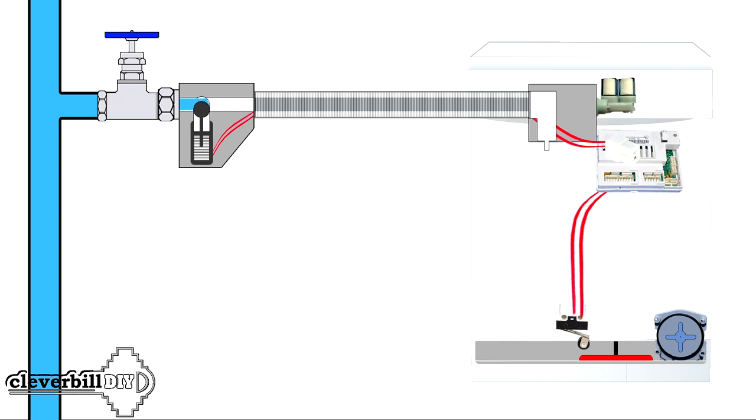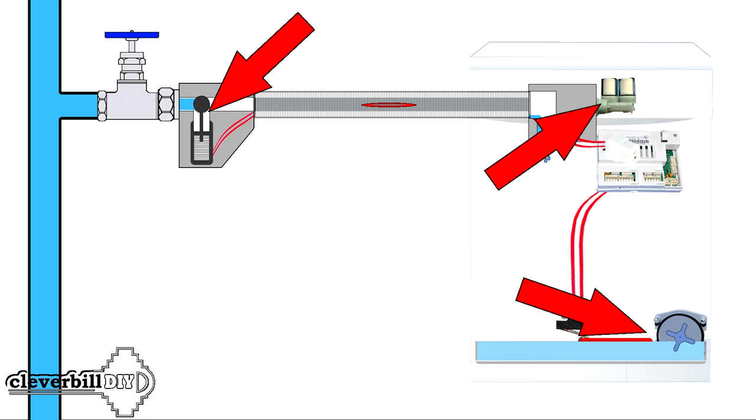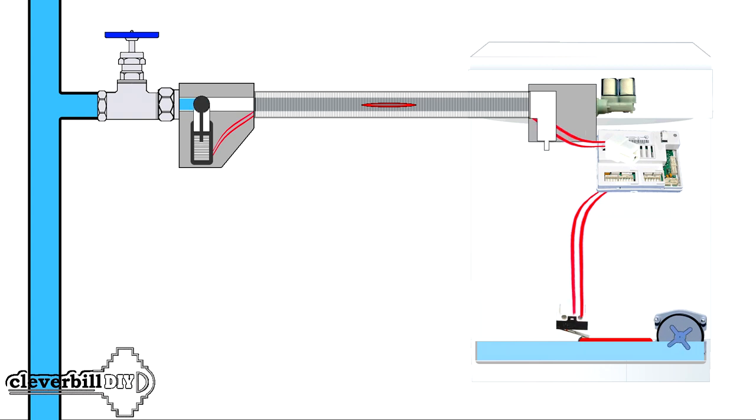The principle of operation of such a protection system differs from the previous one. During the operation of the washing machine, if the inner hose is damaged, water that gets between the two shells begins to flow through the drain pipe onto the tray of the washing machine. When the float ascends, the system switch is triggered, after which the water intake valve located in the hose is immediately closed. Also, the electric valve in the device itself is closed, after which the water drain pump is turned on.